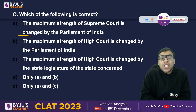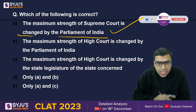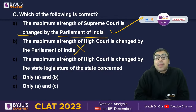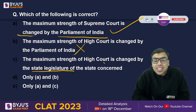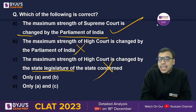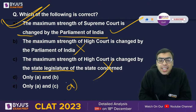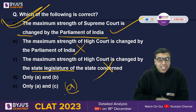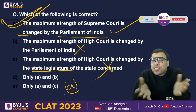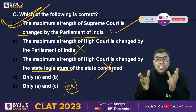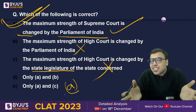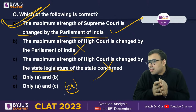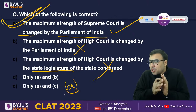The maximum strength of the Supreme Court is changed by the Parliament of India — that is correct. The maximum strength of the High Court is changed by the Parliament of India — no, that is wrong. The maximum strength of the High Court is changed by the state legislature of the state concerned — also no. So the right answer to this question is option A only.